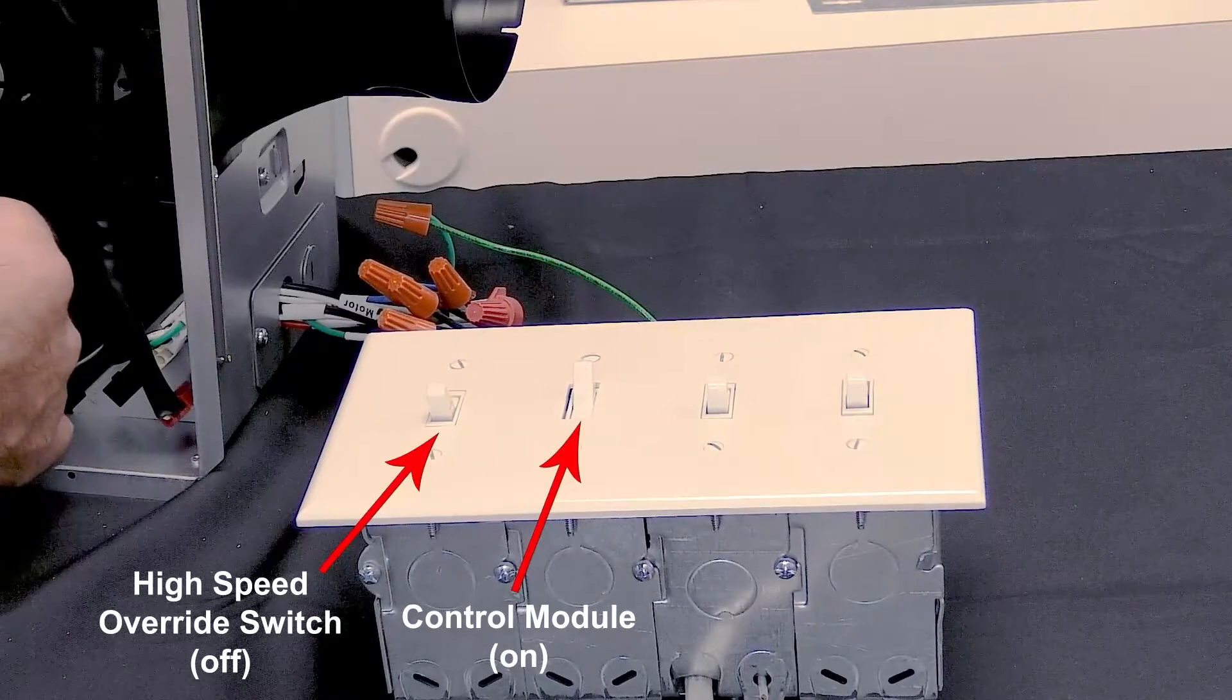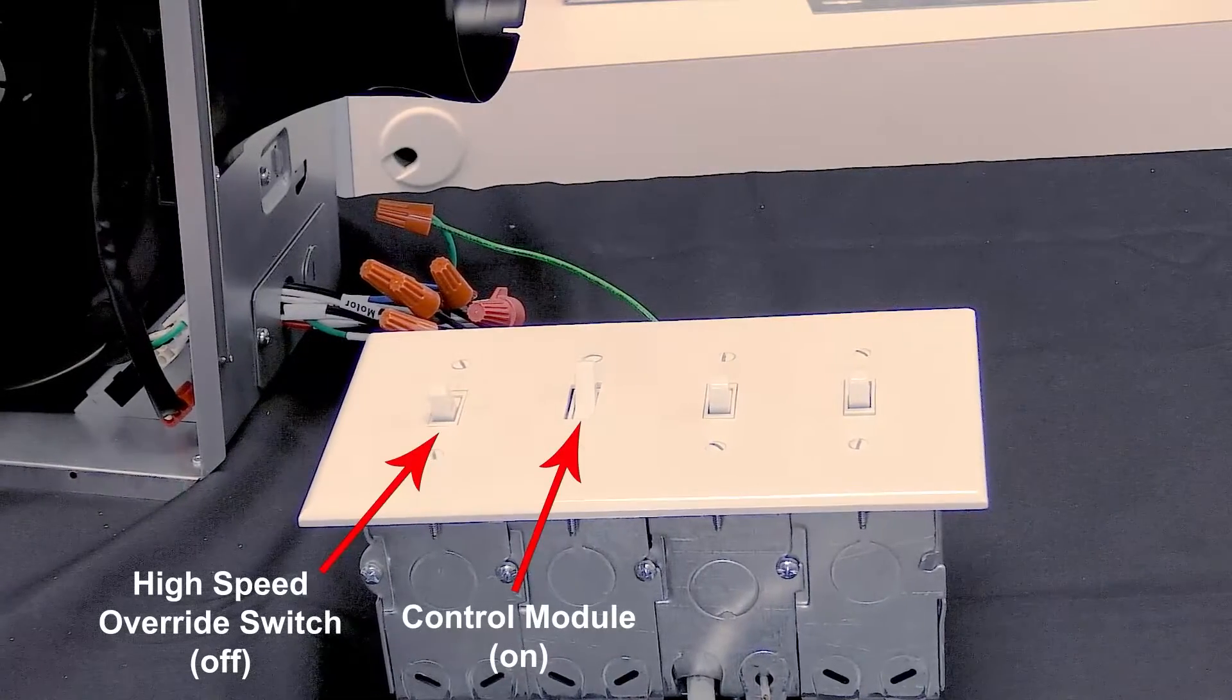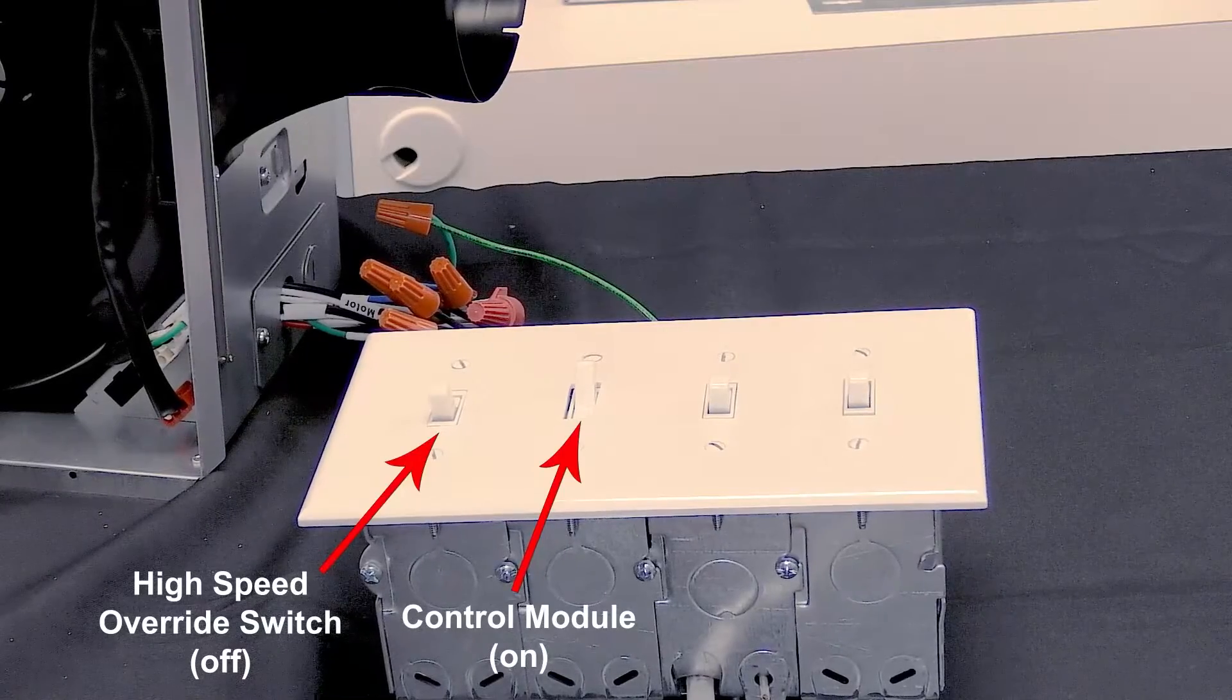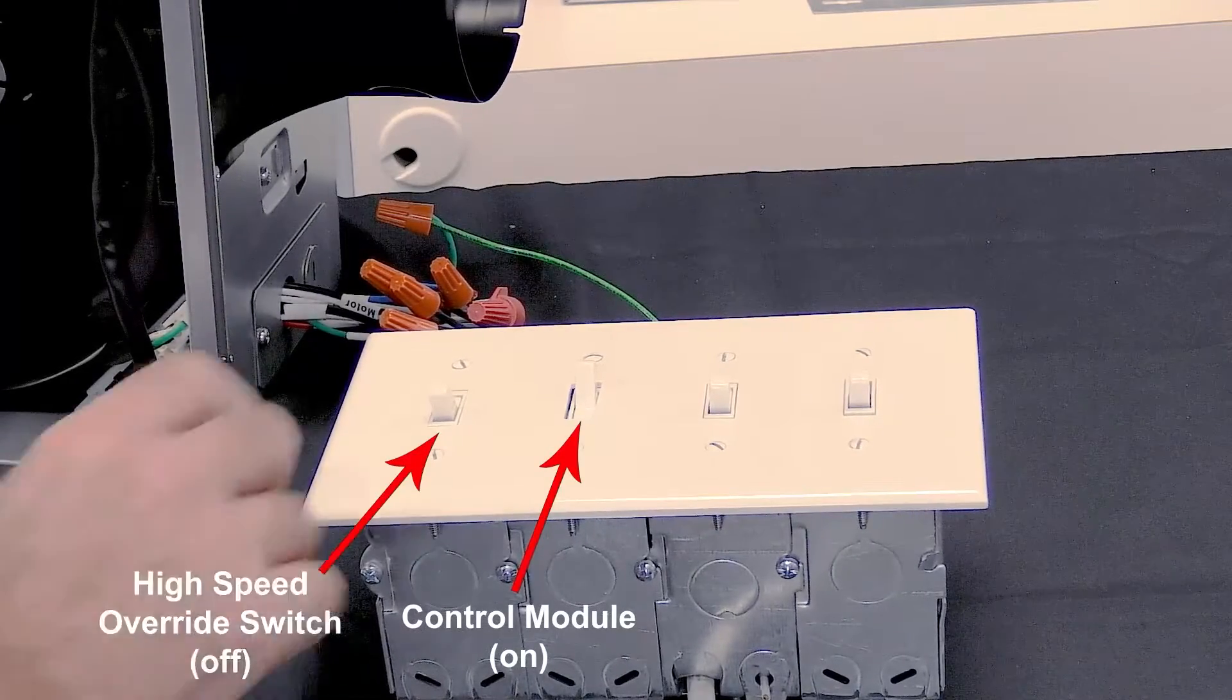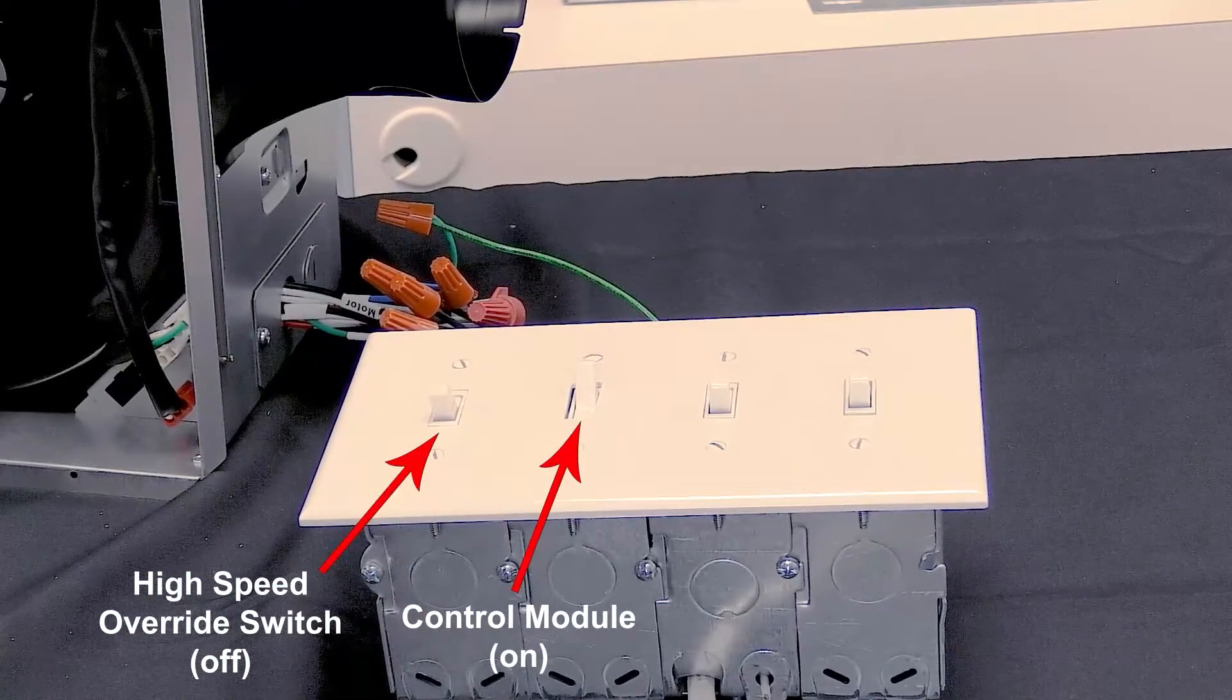When motion and or humidity is sensed, the fan will automatically ramp up to the high-speed setting and continually run on high-speed until motion and humidity is no longer sensed and the user set time delay elapses.